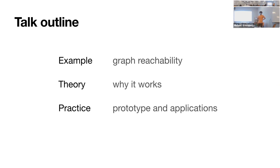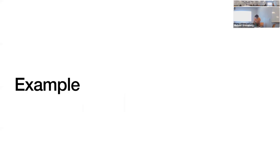This is actually the first time this talk has ever been given — they're the first audience to have ever seen it. For our example, we're going to look at something really simple, which is graph reachability, and think about what a theory of graph reachability might look like.